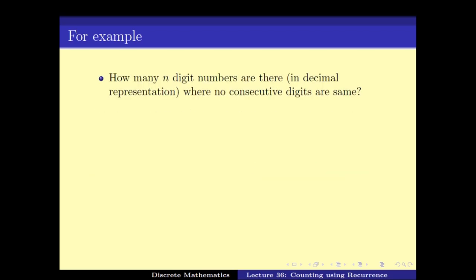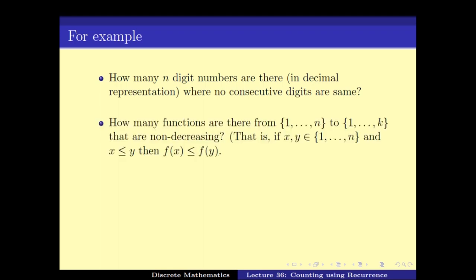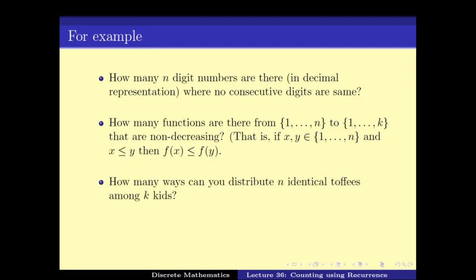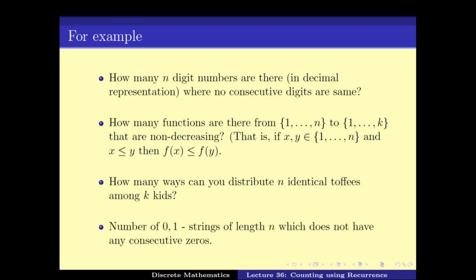We have been looking at a few examples. For example: how many n-digit numbers are there where no consecutive digits are the same? How many non-decreasing functions are there from {1 to n} to {1 to k}? How can you distribute n identical objects among k bins? And finally, how many 0-1 strings of length n do not have any consecutive 0s?